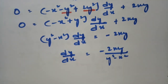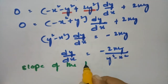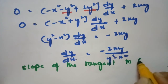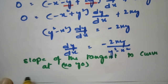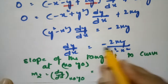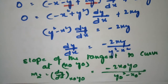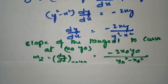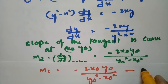The slope of the tangent to curve v = c2 at point (x₀, y₀) is m2 = dy/dx at (x₀, y₀) = -2x₀y₀/(y₀² - x₀²). This is equation number 2.